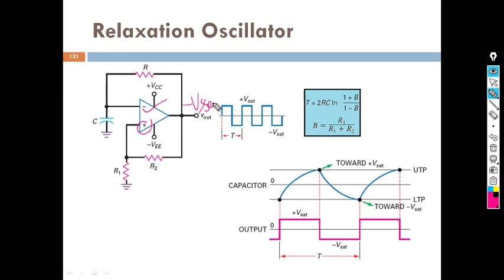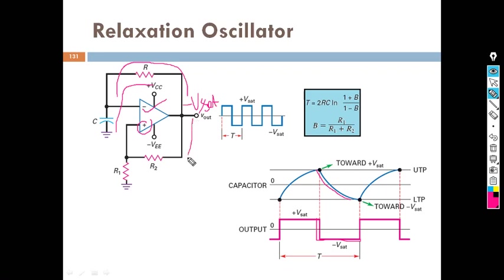That means the output will become minus Vsat. When the output becomes minus Vsat, the same voltage is fed back to the capacitor and now the capacitor will discharge. So the capacitor will discharge. Now what voltage is fed back to the non-inverting terminal?